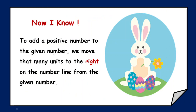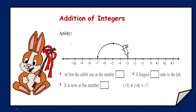So what did we learn from this? Whenever you are adding a positive number to any given number, you have to shift that many units to the right on the number line. Then let's see when the rabbit is hopping towards the left. As we know, when we move towards the left we need to consider it as negative. So initially the rabbit was at the position minus 3. Then he hopped towards the left by 4 units — that is minus 4. Finally he reached the position minus 7. So when you add minus 3 with minus 4, the sum is going to be minus 7.